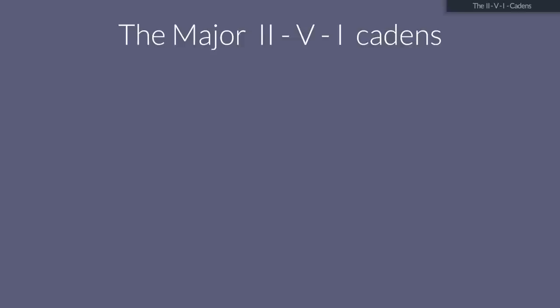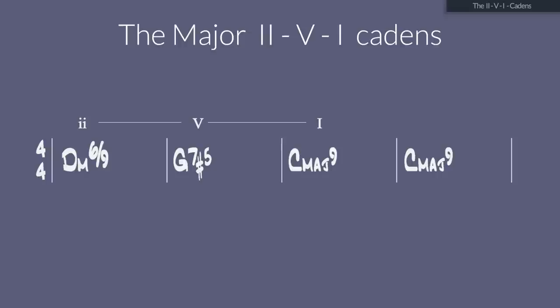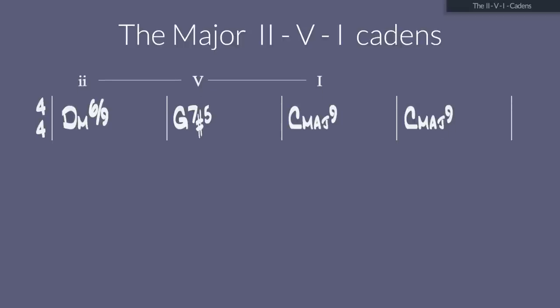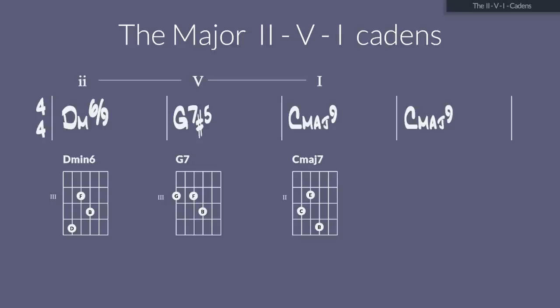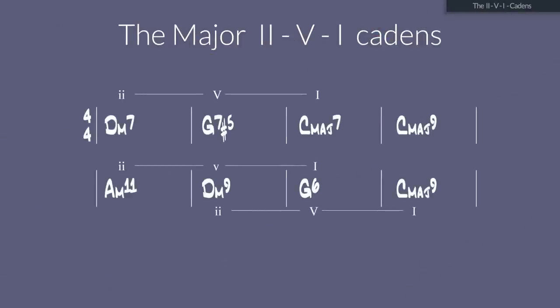And it sounds like this when using only shell voicings. A 2-5-1 in major could also look like this. In the next example I'll show you a progression that is a combination of two 2-5-1 cadences. Look at the progression, pause the video and try to play the progression in shell voicings, then listen to the result and see if you had it right.